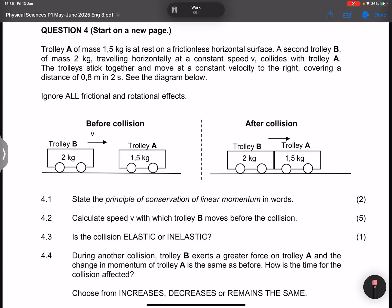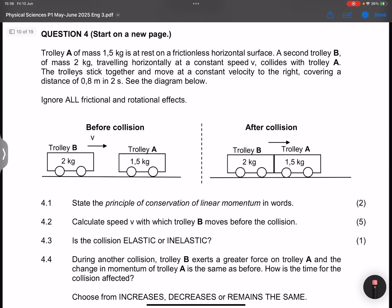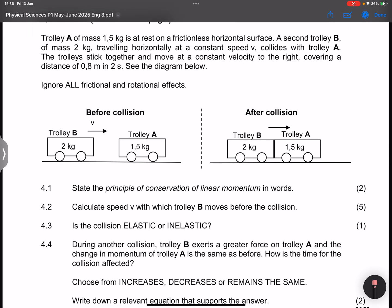Now we hop on to question number four from the May-June 2025 exam. Let's go for it. They say trolley A of mass 1.5 kilograms is at rest. What I would do is indicate that on my diagram, so velocity of A is zero. On a frictionless horizontal surface, a second trolley B of mass 2 kilograms, traveling horizontally at a constant speed V, collides with trolley A. The trolleys stick together and move at a constant velocity to their right, covering a distance of 0.8 meters in two seconds.